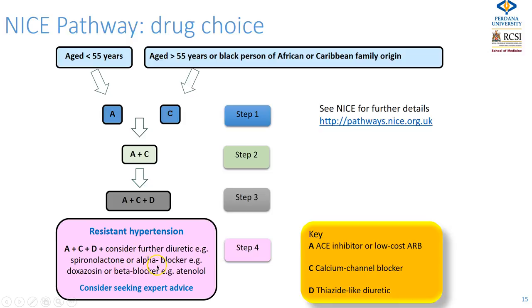Alternatively you may use spironolactone or an alpha blocker such as doxazosin. At this point, if the patient's blood pressure remains uncontrolled, you should be checking concordance and inquiring again about alcohol consumption and salt intake. If it remains uncontrolled you should then refer for expert advice.